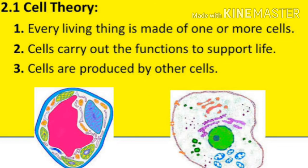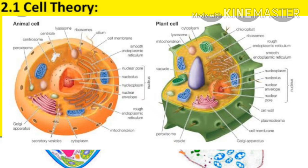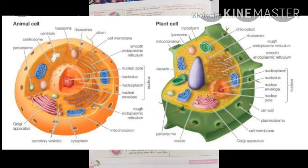Orchid plants have the smallest seeds. Cell theory was given by M.J. Schleiden and Theodor Schwann in 1838–39. Rudolf Virchow (1858) said new cells arise by the division of pre-existing cells only. In the cell, structures without any membrane are ribosomes, centrioles, and nucleolus.